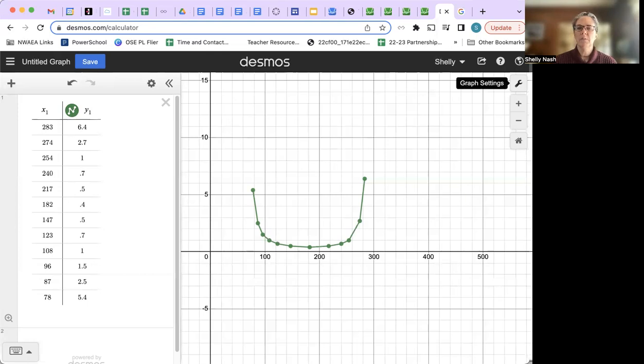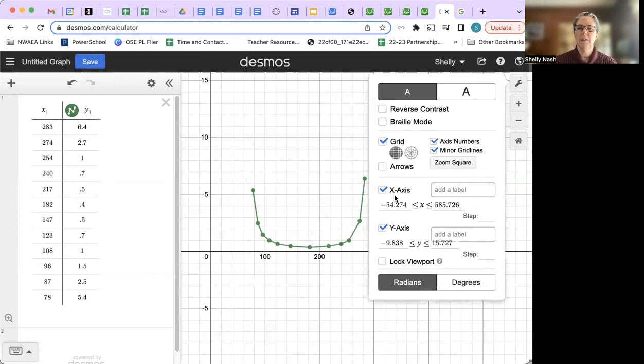Then also, if you'd like to put labels on the x-axis, you could add a label that might be angle. Best practice would be to put the title and the label.